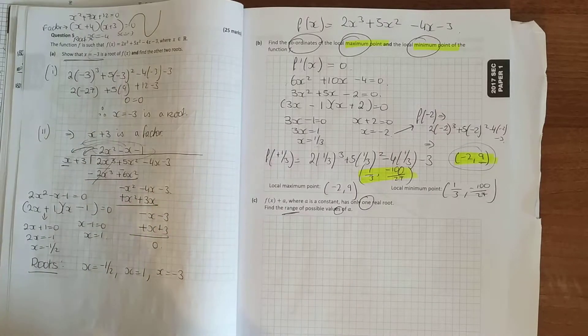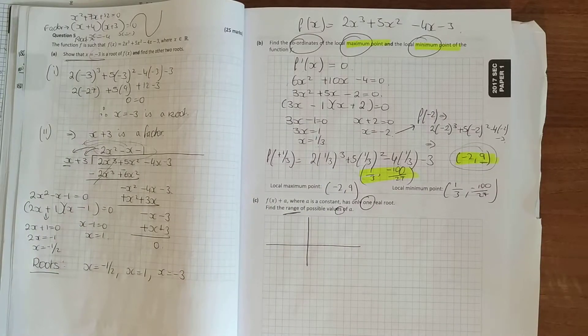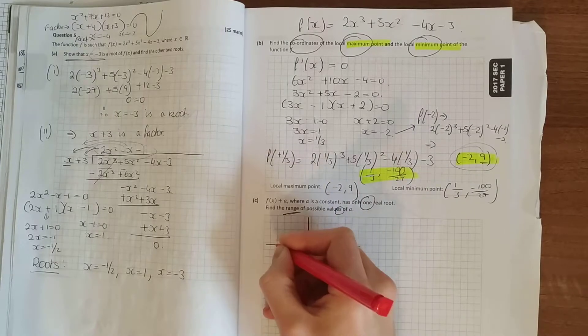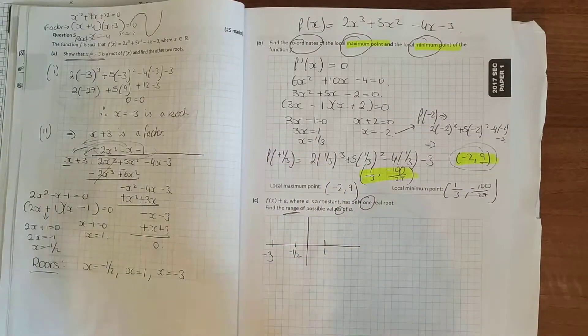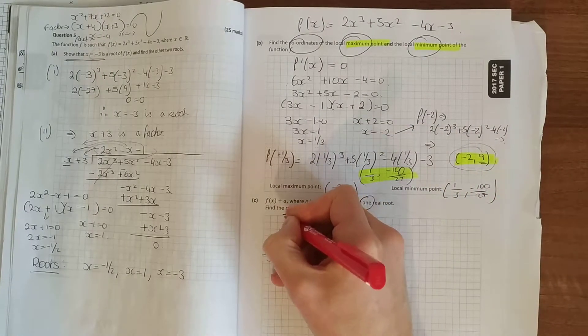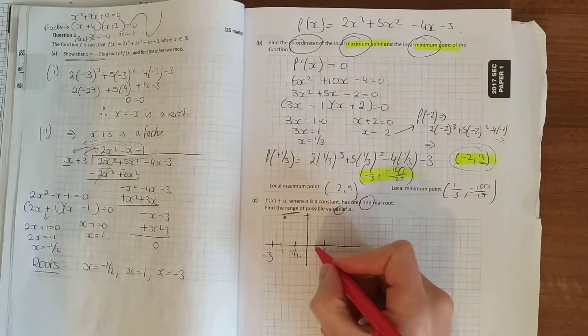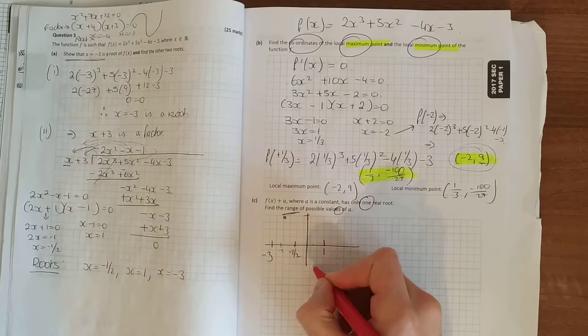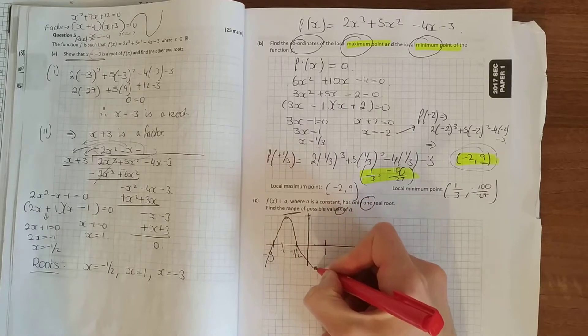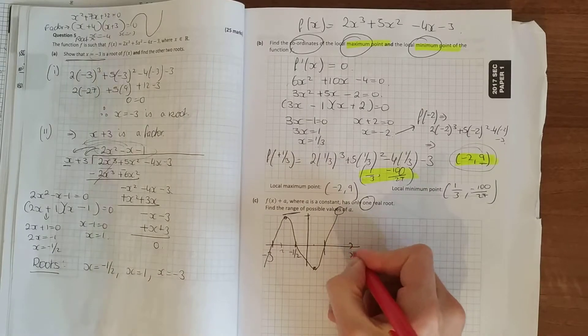So if you were to sketch your cubic function, we said the roots was minus a half, there you go minus a half, one, and minus three. It had a maximum point at minus two now. Just a rough sketch, minus two now. And it had a minimum point of a third, minus 100 over 27, somewhere down there. It's a negative thing. So your rough sketch of your cubic. I didn't calculate where it cuts the y axis or the x axis or anything.